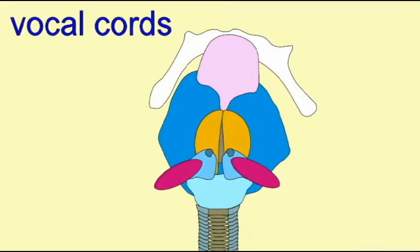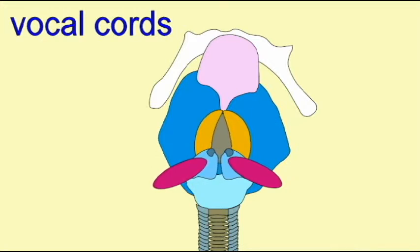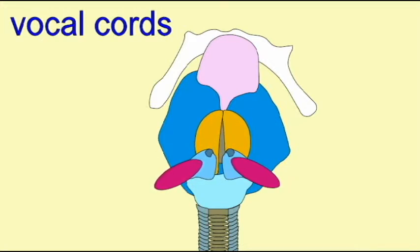The volume of a sound is controlled by the amount of air which passes through the respiratory tract and past these vocal cords. More air creates a louder sound.